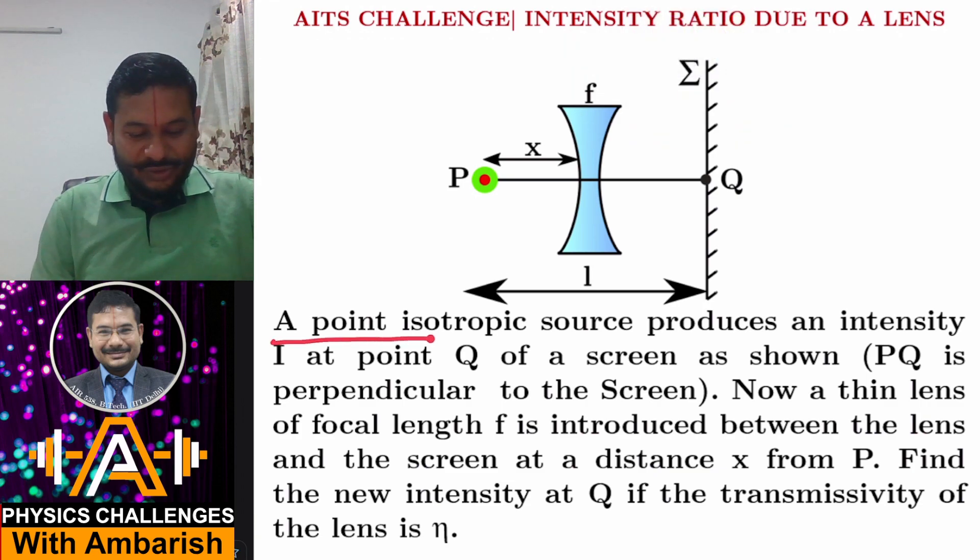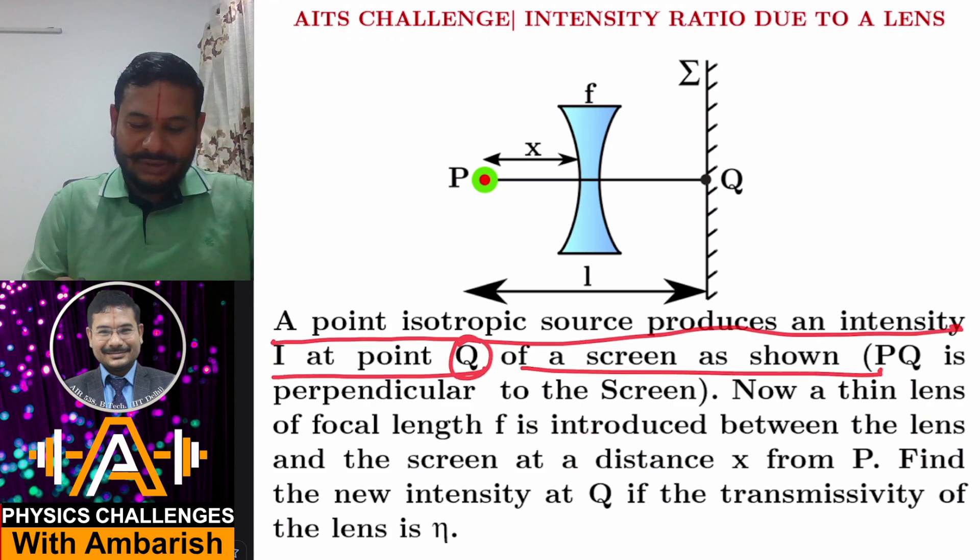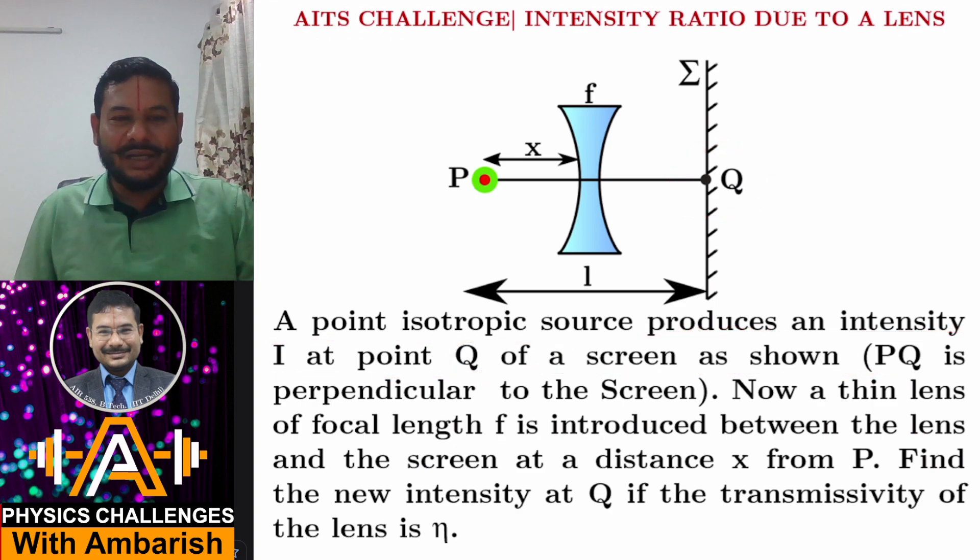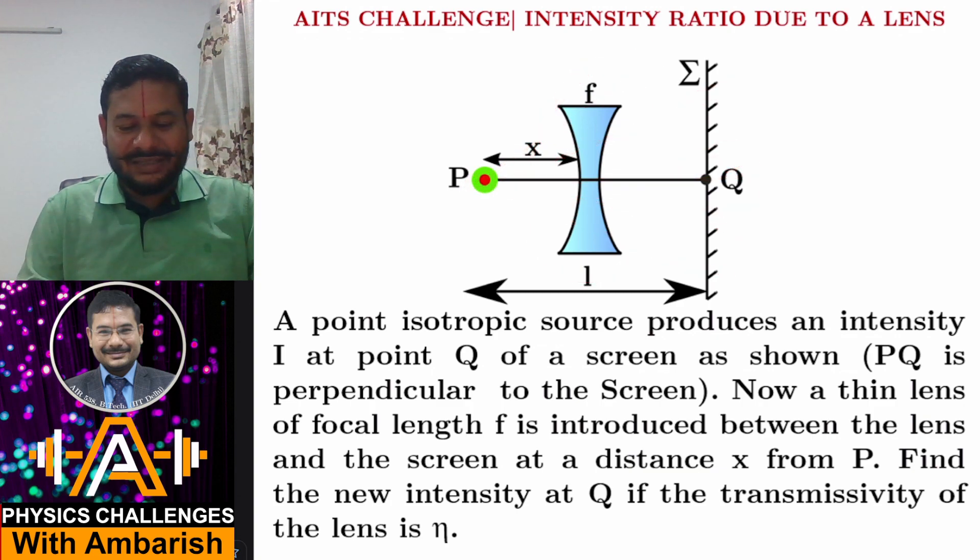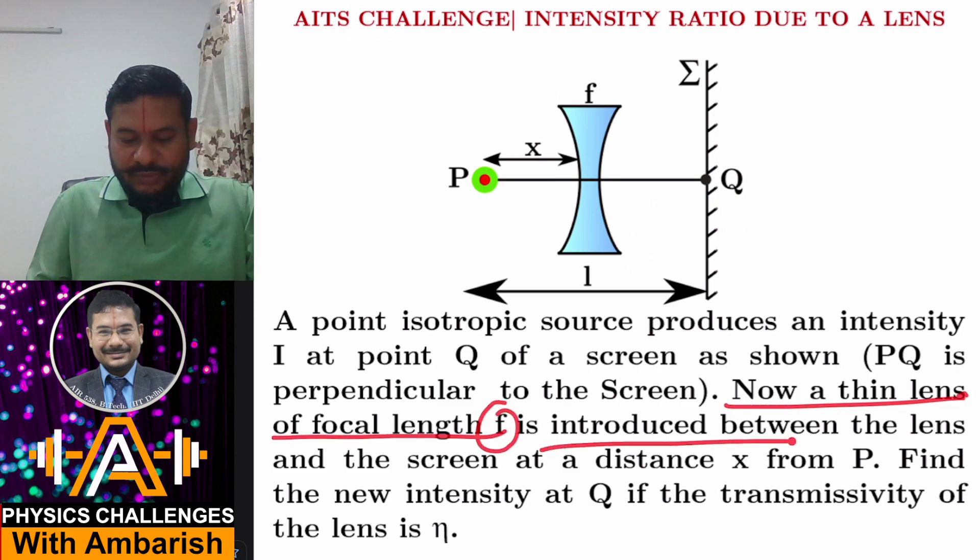So what's the question? A point isotropic source produces an intensity I at point Q of a screen as shown. So here is a point Q and there is no lens initially. Because of this point source rays are going and at this point the intensity is I because of this point source. And this line PQ is perpendicular to the screen and initially there is no lens.